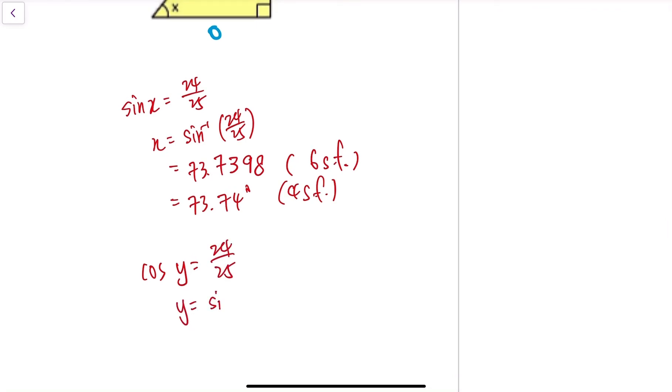So y equals cosine inverse of 24 over 25. This will give us 16.2602, six significant figures.